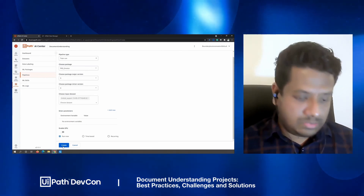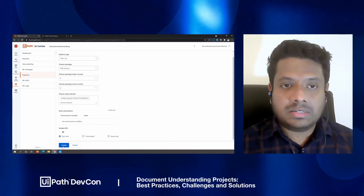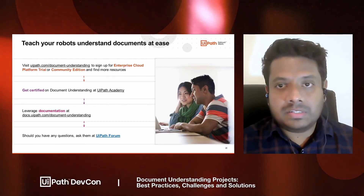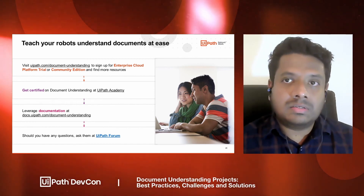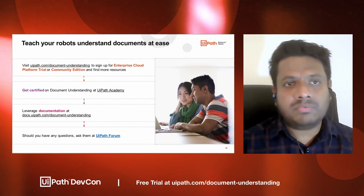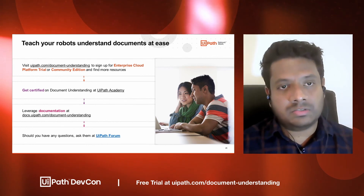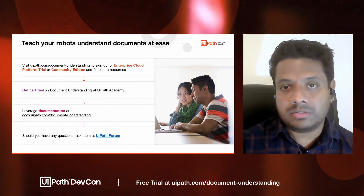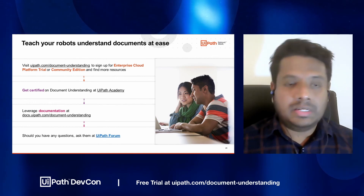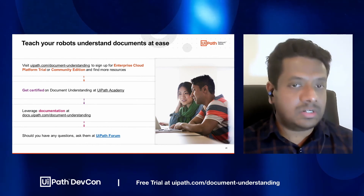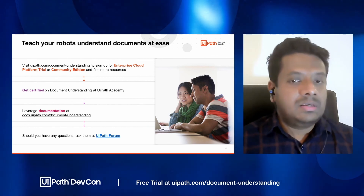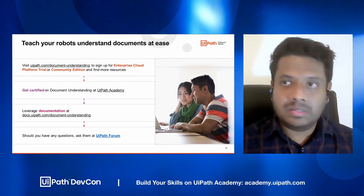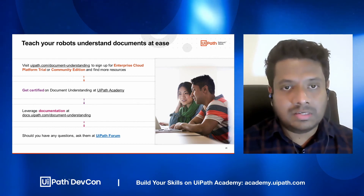As an additional note, in the next release of Document Understanding, we will have auto-retraining capabilities as well, which will basically improve the experience of training the data. To learn more about Document Understanding, you can sign up for the Enterprise Cloud track or Community Edition to try it out yourself. You can also get certified on Document Understanding through UiPath Academy, which has different video tutorials provided by UiPath and community contributors. Documentation is also available for these activities. If you have any questions, feel free to reach out to any of us or to the community through UiPath. That concludes the session on Document Understanding — thank you very much for listening.